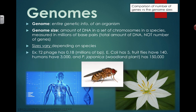The sizes of genomes depend on the actual species. This is just for comparison — the syllabus gives suggestions for organisms you should know, but you're not expected to recall these exact numbers. It's more likely to show up in a database, application, or comparison question. So if you understand the big picture, you'll be okay. T2 bacteriophage, a type of virus, has 0.18 million base pairs — that's 180,000 base pairs. E. coli has 5 million base pairs. Fruit flies have 140 million base pairs. Humans have 3,000 million base pairs. And a woodland plant called Paris japonica has 150,000 million base pairs.